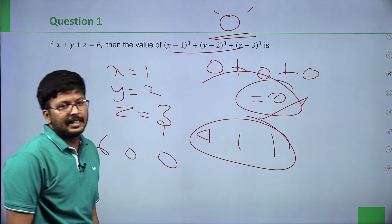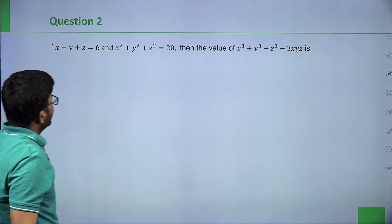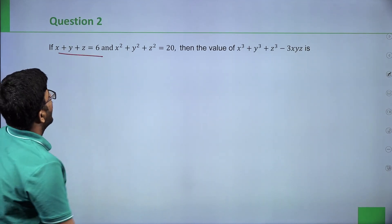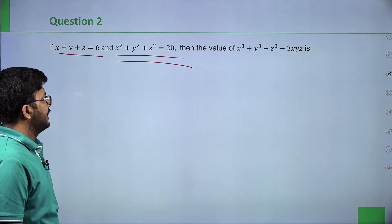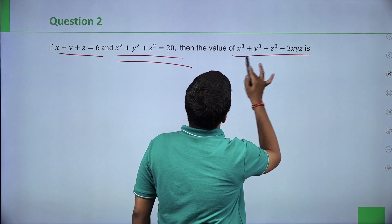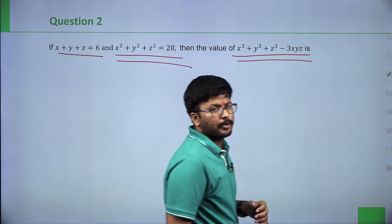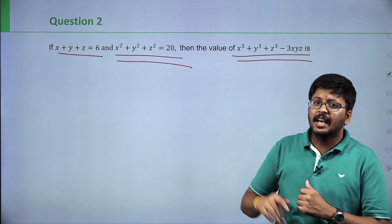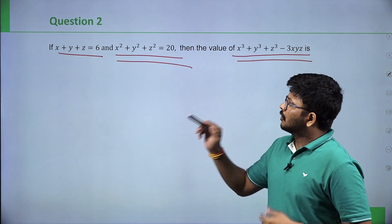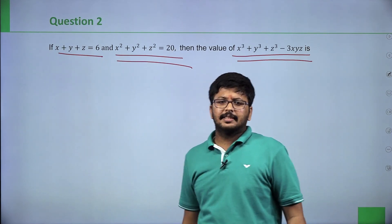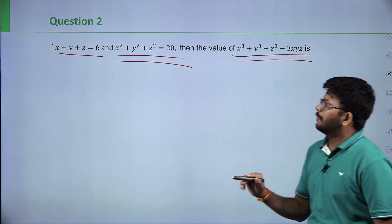Second question: if x plus y plus z is equal to 6 and x square plus y square plus z square is equal to 20, find the value of x cube plus y cube plus z cube minus 3xyz. We can solve this in class. Given: x plus y plus z = 6, x square plus y square plus z square = 20.